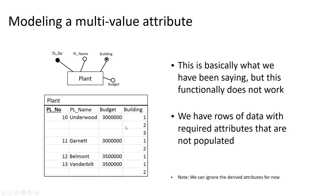In this case, this doesn't really work because we don't have any values for the attributes of plant number, plant name, and budget — at least one of which, plant number, is required. So this is conceptually what we've been saying, but it doesn't really make sense when we start developing this into our actual database.